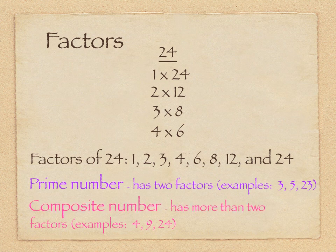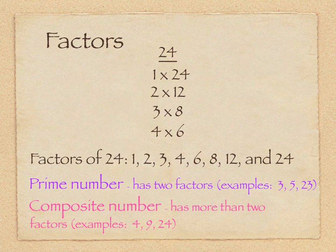A composite number has more than two factors. Examples of this would be four, nine, and twenty-four. For instance, nine only has three factors: one, itself, and of course three times three. So we could say that nine has the factors one, three, and nine.